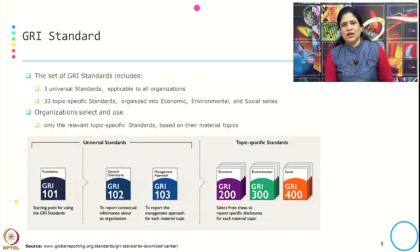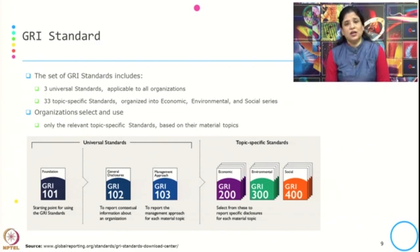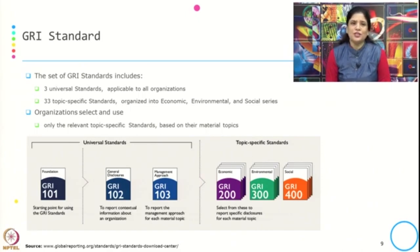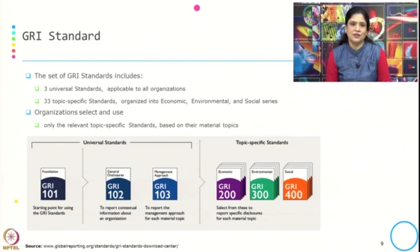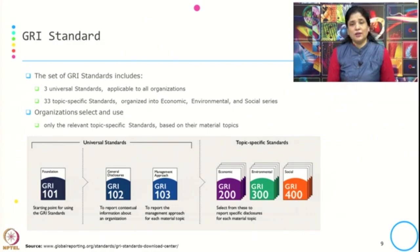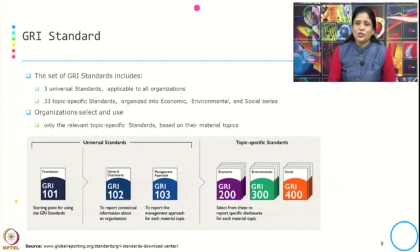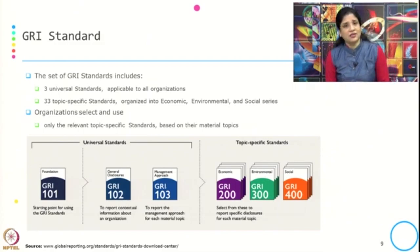The GRI standards include two types: three universal standards applicable to all organizations, and 33 topic-specific standards organized into economic, environmental and social series. Organizations select only the relevant topic-specific standards based on material topics, their business, and the products or services they offer. The three universal standards are: GRI 101 (Foundation), GRI 102 (General Disclosures) and GRI 103 (Management Approach).